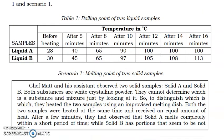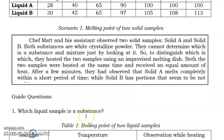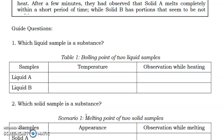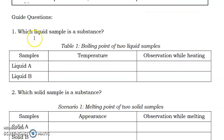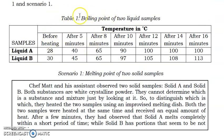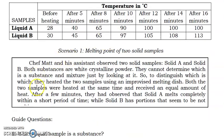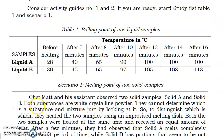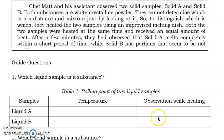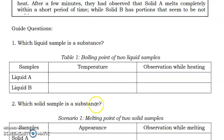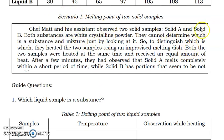And then, for scenario 1, melting point of two solid samples. So, read the paragraph here for scenario 1 and then answer the guide questions. I think the same lang to nung sa lesson 1 natin. For the guide question, which liquid sample is a substance? So, dito yun. Sa table 1, ito yung tinutukoy. So, ang sasagutin nyo, either A or B. Then, complete the table. So, what is the temperature of the boiling point of liquid A based on the table? And what is the temperature of the boiling point of liquid B? Again, based on the table.